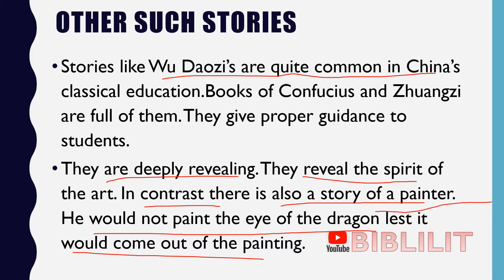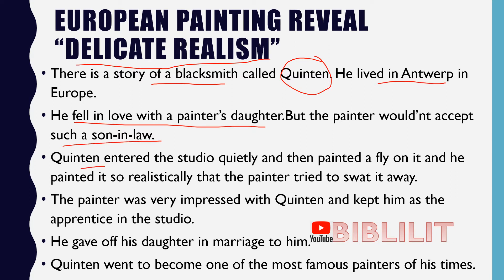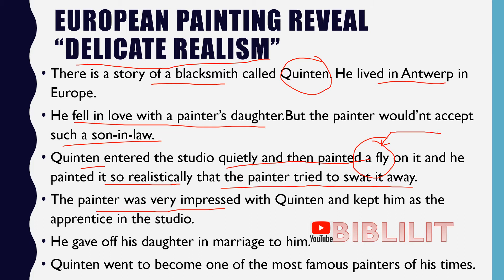In contrast to Chinese paintings, European paintings reveal delicate realism. There is a story of a blacksmith named Quentin who lived in Antwerp in Europe. He fell in love with a painter's daughter, but the painter wouldn't accept such a son-in-law. So Quentin quietly entered the studio and painted a fly so realistically that the painter tried to swat it away, thinking it was real. The painter was so impressed that he kept Quentin as an apprentice, gave his daughter in marriage to him, and Quentin went on to become one of the most famous painters of his time.